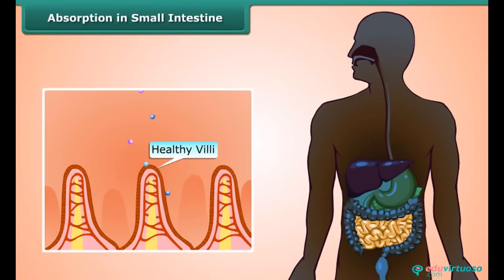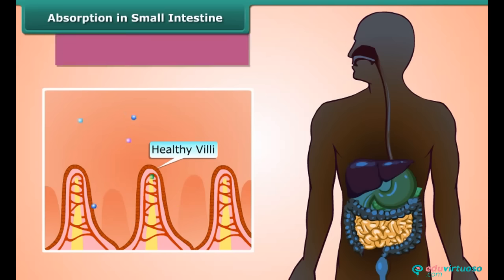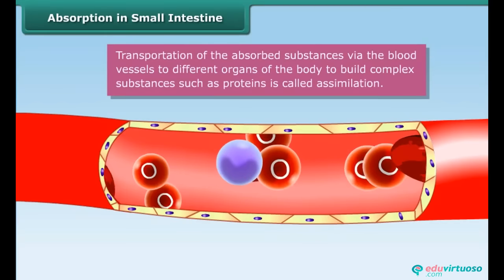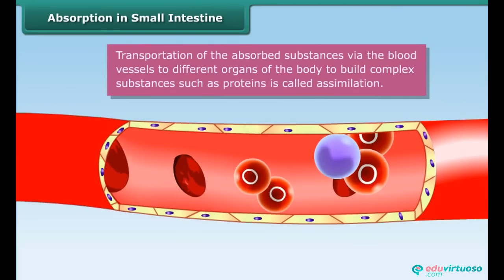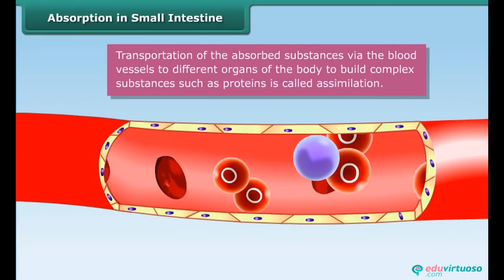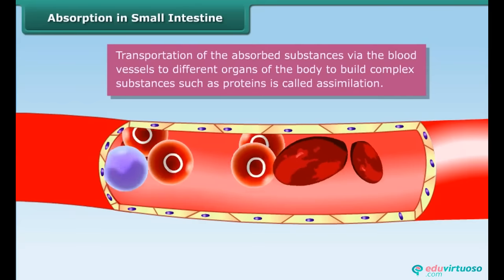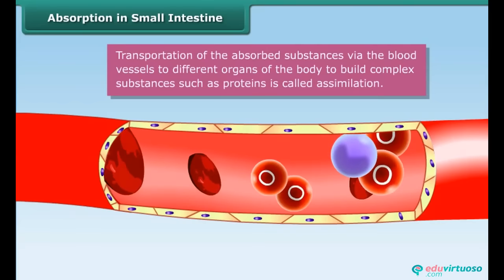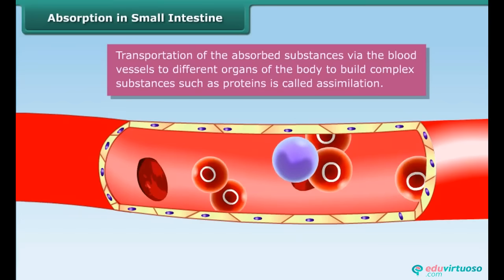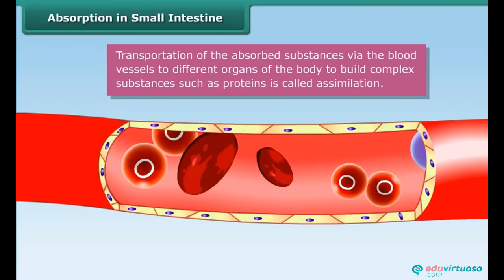There are tiny finger-like structures called villi lining the inside of the small intestine. Villi increase the surface area for absorption of digested food. The absorbed substances are then transported via blood vessels to different organs of the body, where they are used to build complex substances such as proteins. This is called assimilation.